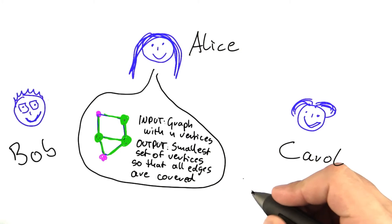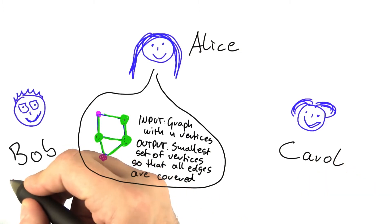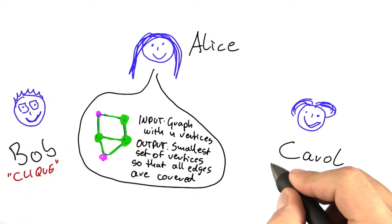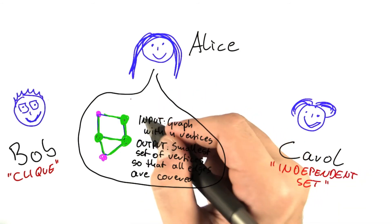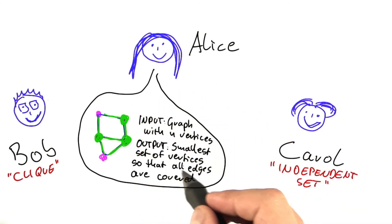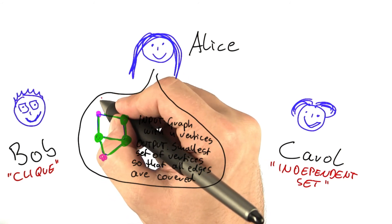So again, we should give that problem a name to refer to it. Just as Bob was working on clique and Carol was working on independent set, we have Alice working on her problem. And since she is using the vertices to cover the edges, we'll call her problem vertex cover.